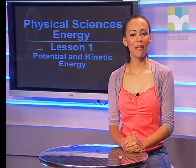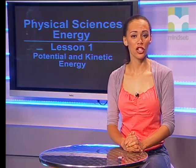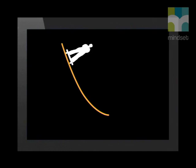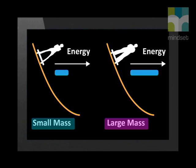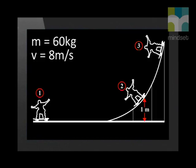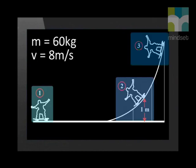The amount of gravitational potential energy that a skateboarder possesses is dependent on two variables: the mass of the person and the height to which he is raised. The bottom of the ramp is the point of reference. There is a direct relation between gravitational potential energy and mass — more massive objects have greater gravitational potential energy. There is also a direct relation between gravitational potential energy and vertical height. At position 1, the boy has no gravitational potential energy. At position 2, he is higher up, so his gravitational potential energy increases. At position 3, the highest point, the gravitational potential energy is at a maximum.